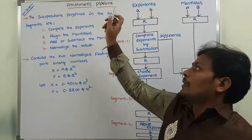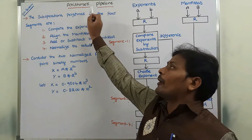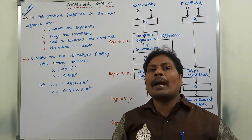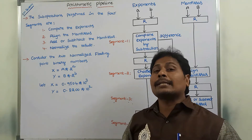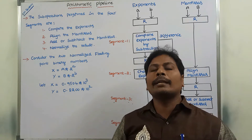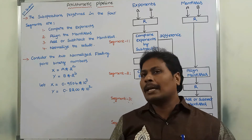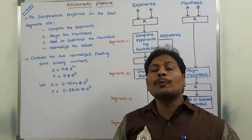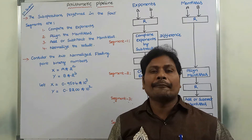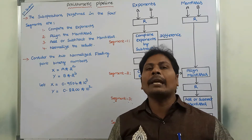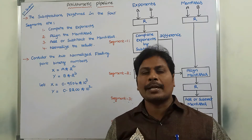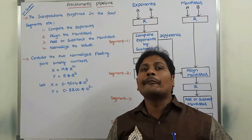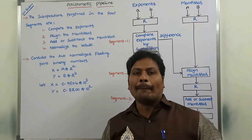Next, we can go for Arithmetic Pipeline. Arithmetic Pipeline is generally found in high-speed computers. Arithmetic Pipelines are usually implemented for performing floating point operations and multiplication of fixed point numbers.